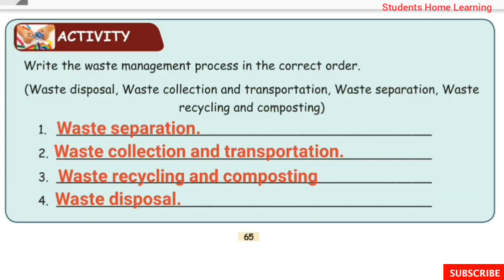Activity: Write the waste management process in the correct order. First: waste separation — separating waste by category. Second: waste collection and transportation — collecting and carrying the waste. Third: waste recycling and composting — recycling waste and preparing compost. Fourth: waste disposal — disposing of the remaining waste.